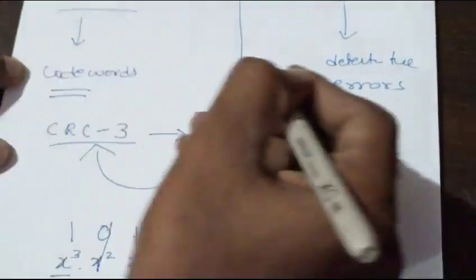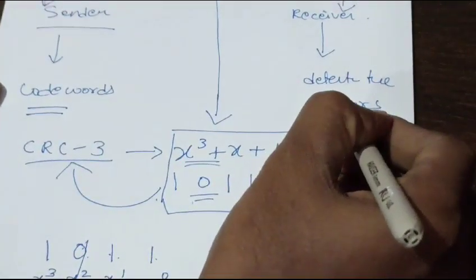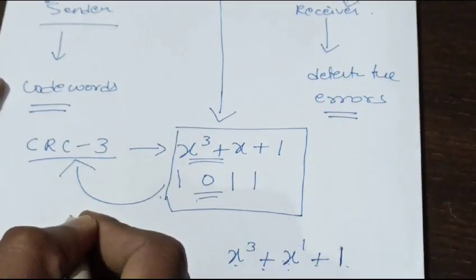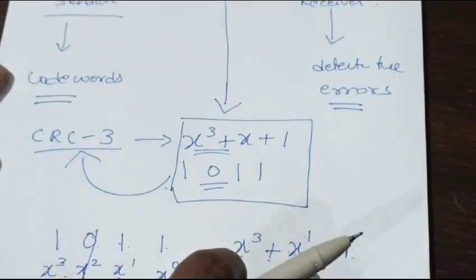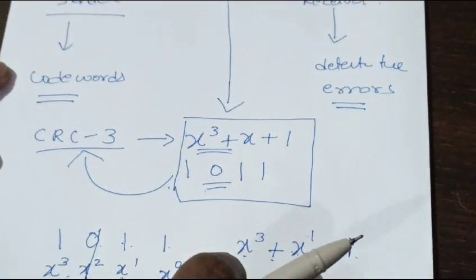Then how are these generated polynomials used for generating the code word, and how are they used to check the errors? We will see in the upcoming videos. Thanks for watching and subscribe for more videos.